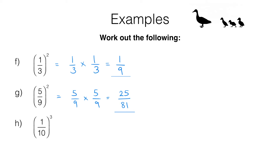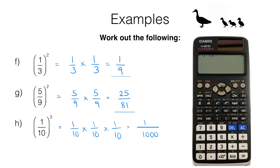Moving on to question H, we've got 1 tenth cubed, which you can work out as 1 tenth multiplied by 1 tenth multiplied by 1 tenth, giving you 1 over 1,000. Or you could work it out on the calculator.